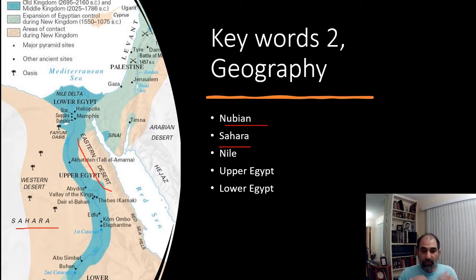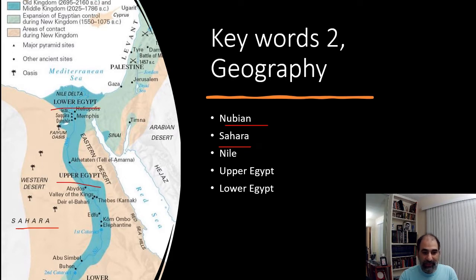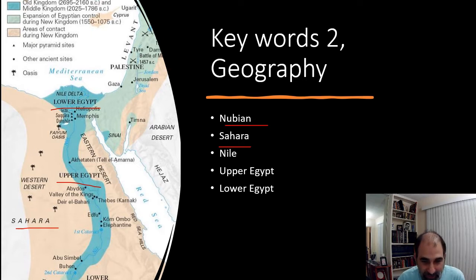The other important part of Egypt is the Nile River — probably the most famous river in the world. One interesting thing about the Nile is it actually flows from south to north. Because of that, we get terms that sometimes confuse students: Lower Egypt is in the north, and Upper Egypt is in the south — because that's how the river flows. So be careful on that.